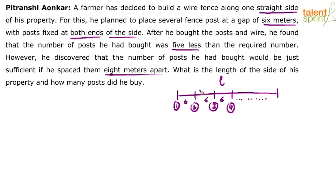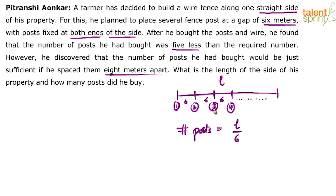If you have gone through our videos on number theory, you would know that to find the number of posts, you take the total length L divided by 6. But L by 6 does not give you the number of posts — it gives you a value to which you have to add 1. So the number of posts is L by 6 plus 1. This plus 1 is very important to remember.